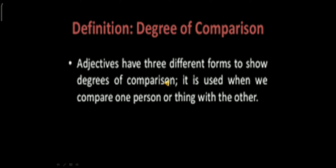Now let us talk about the degrees of comparison. Adjectives have three different forms to show degrees of comparison, used when we compare one person or thing with another. There are three degrees: positive, comparative, and superlative. We use these three different degrees to compare.